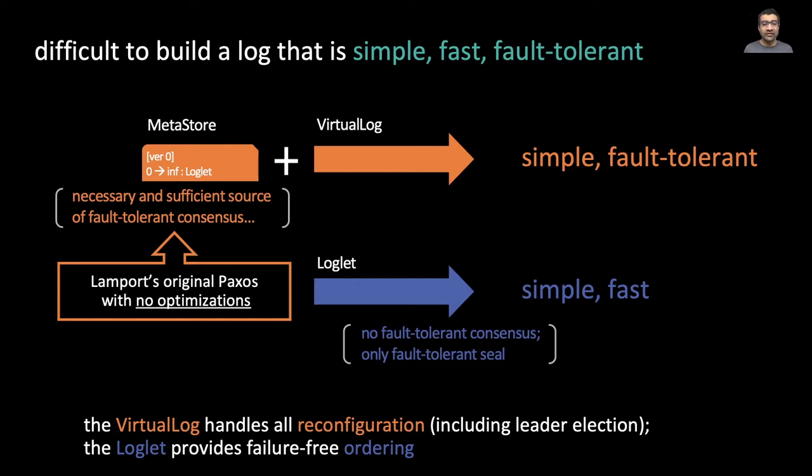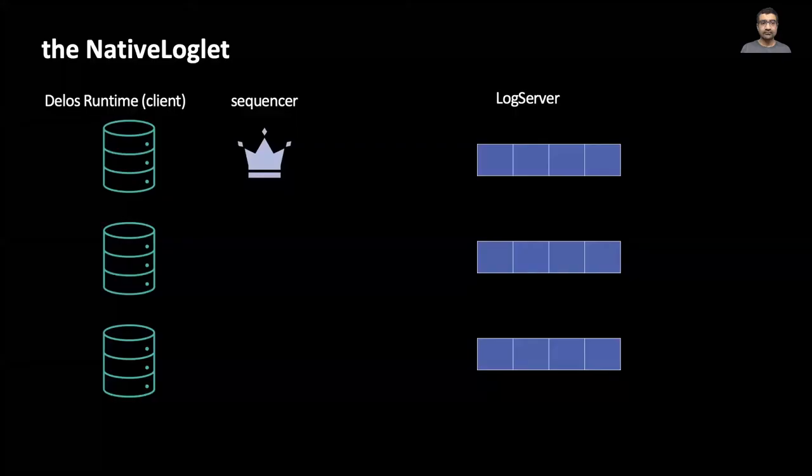For the meta store, we can simply use multiple instances of Lamport's original single-decree Paxos protocol, which is really compact and simple. All of the complexity comes from the multi-Paxos performance optimizations, which we can completely avoid for the meta store, since it is only triggered on reconfigurations. For the loglet, we designed a new custom protocol called the native loglet.